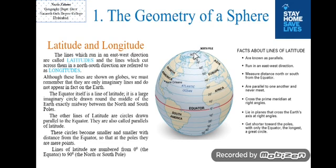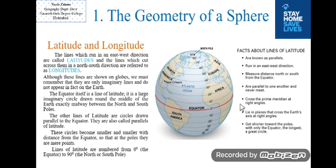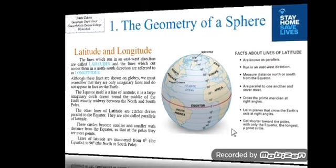Lines of latitude are numbered from 0 degrees — the equator — to 90 degrees at the North and South poles. Some facts about lines of latitude: they are known as parallels; they run in an East-West direction; they measure distance North or South from the equator; they are parallel to one another and never meet; they cross the prime meridian at right angles; they lie in planes that cross the Earth's axis at right angles; and they get shorter towards the poles, with only the equator — the longest — being a great circle.